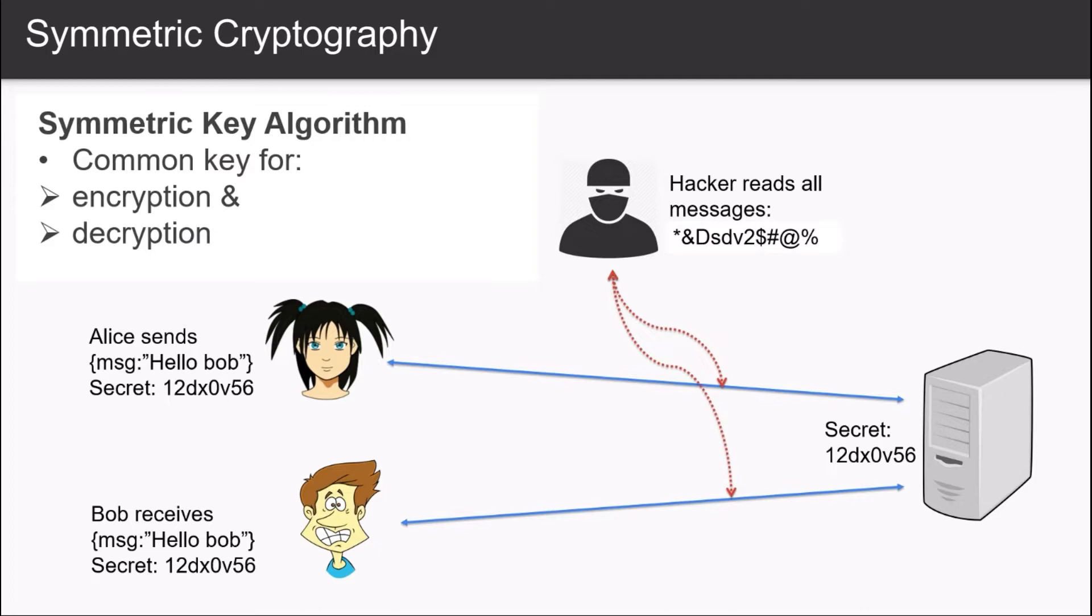This is called symmetric key algorithm where the same key is used to encrypt the plaintext as well as to decrypt the ciphertext. And the most popular algorithm among these is the AES, Advanced Encryption Standard. So guess what, we just solved the problem right? Alice and Bob can securely communicate with each other.